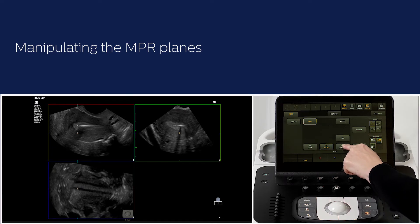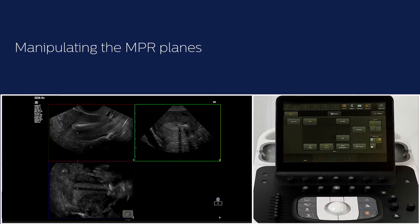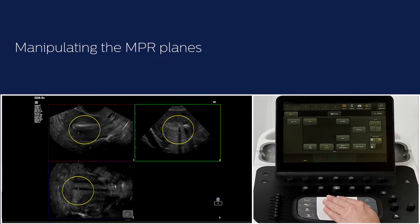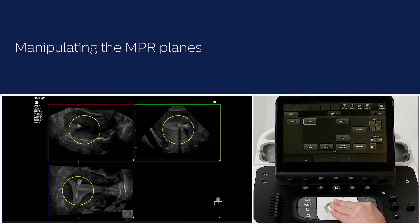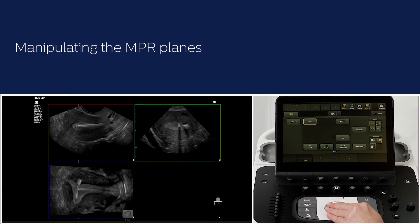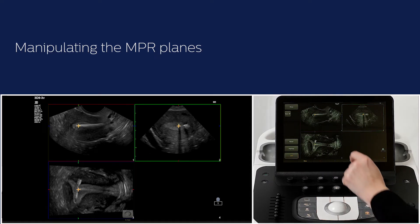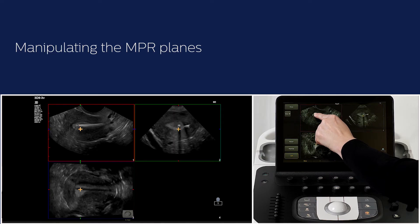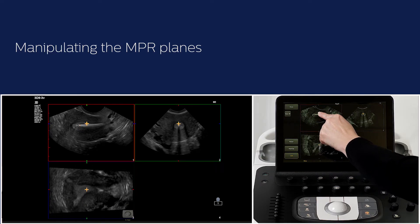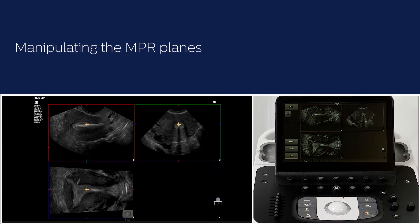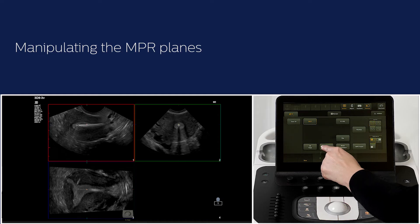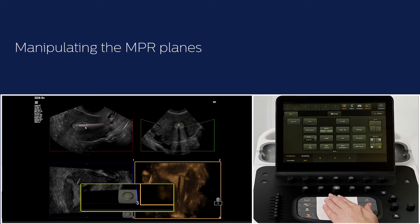At any time, you can press Reset Orientation on the touch screen to return to the original orientation. To see an area of interest in all three MPR planes, move the cursor with the trackball to the area of interest. MPR Touch can also be used to manipulate the reference cursor on the touch screen. If we did not hide the volume, use the pointer to activate the yellow cursor and move it to the area of interest.